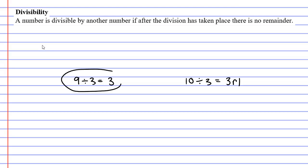So we notice in one example we have no remainder, while in the other example we have a remainder.